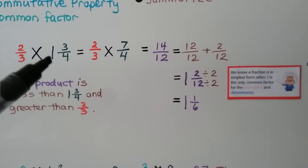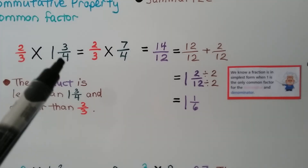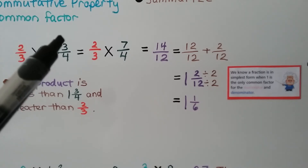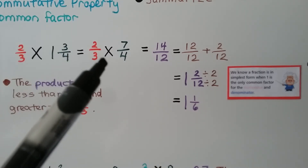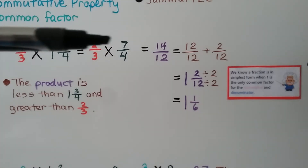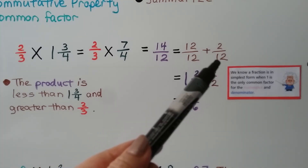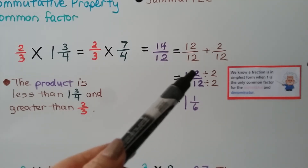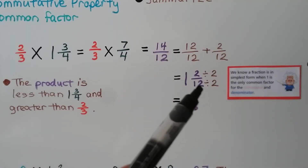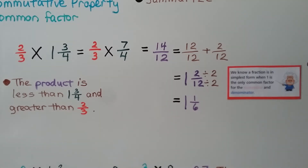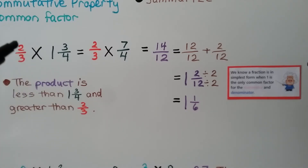For 2 thirds times 1 and 3 fourths, we rename the mixed number as a fraction greater than 1: 1 times 4 is 4, plus 3 is 7, so 1 and 3 fourths equals 7 fourths. Now we have 2 thirds times 7 fourths. Multiplying numerators gives 14, denominators gives 12, so we have 14 twelfths. That equals 1 whole and 2 twelfths; simplified by dividing by 2, we get 1 and 1 sixth. This product is less than 1 and 3 fourths and greater than 2 thirds.